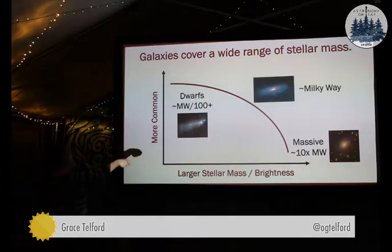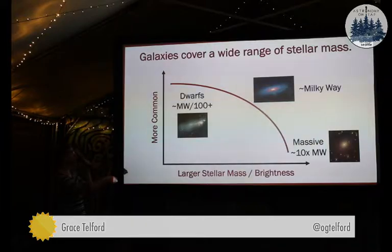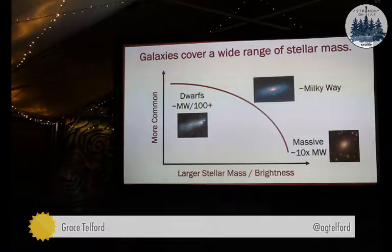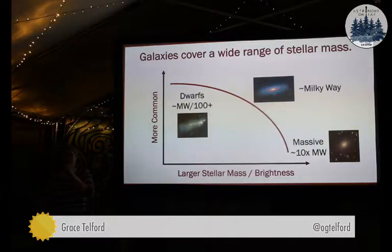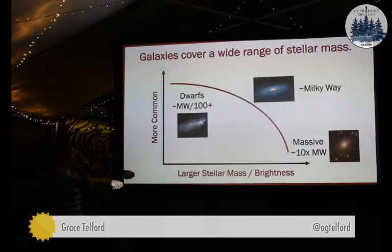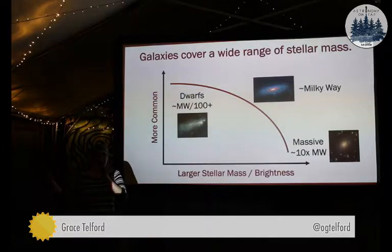At the other extreme, you have these dwarf galaxies, which are extremely common relative to more massive galaxies. A dwarf galaxy is something that is at least 100 times less massive than our Milky Way. It can be much more or much less massive than that, actually. Dwarf galaxies — here's your general picture. I just want to emphasize that this is just the most well-understood part of the galaxy population, and this is a thousand times difference in stellar mass. So this is a pretty wide range we're talking about here.